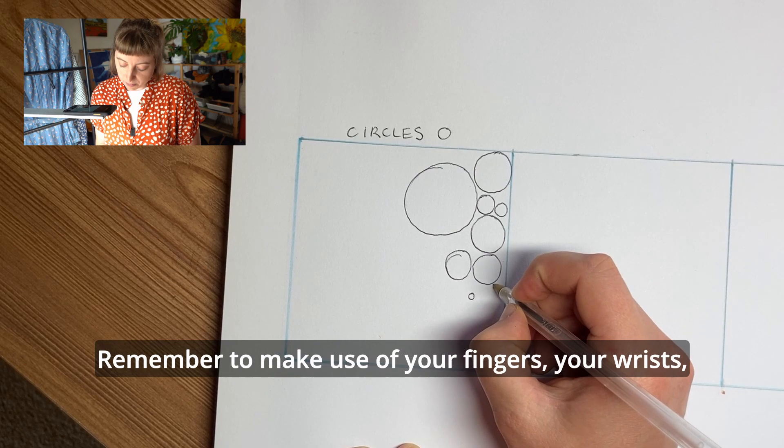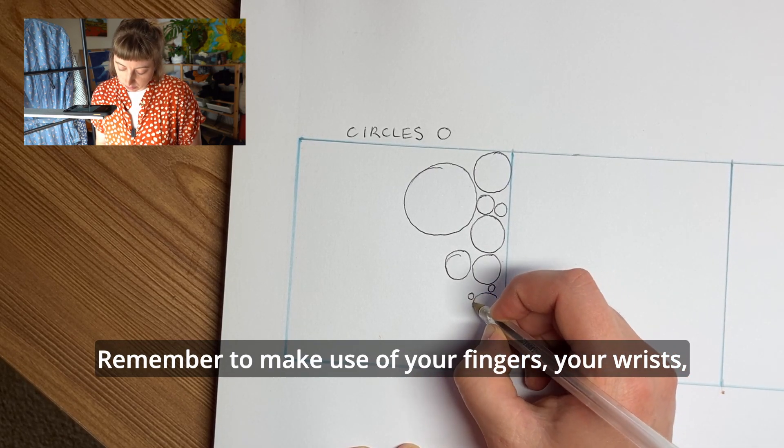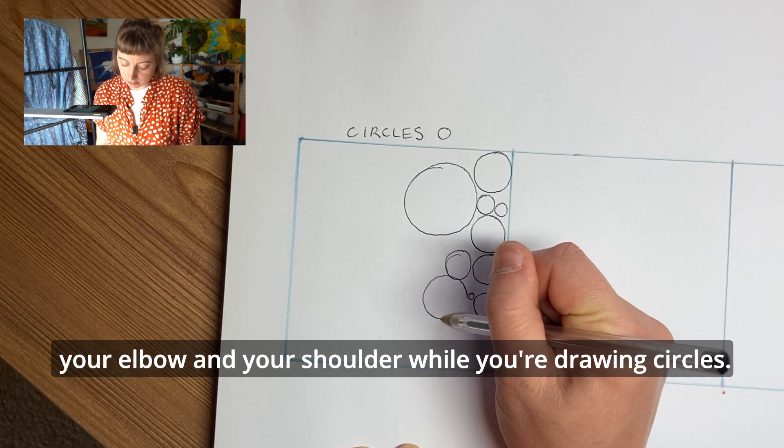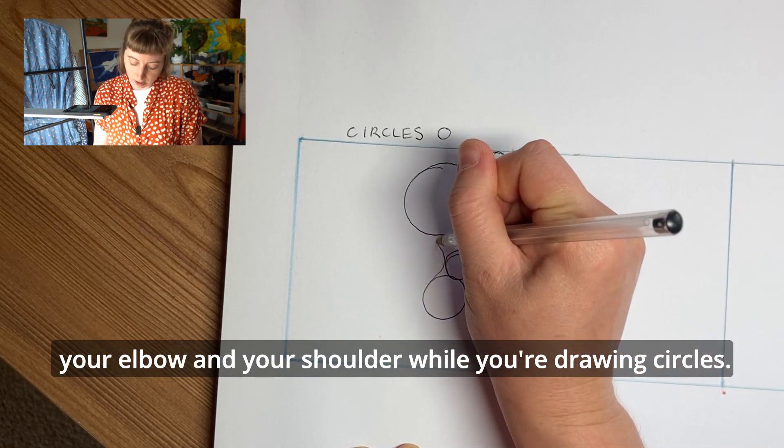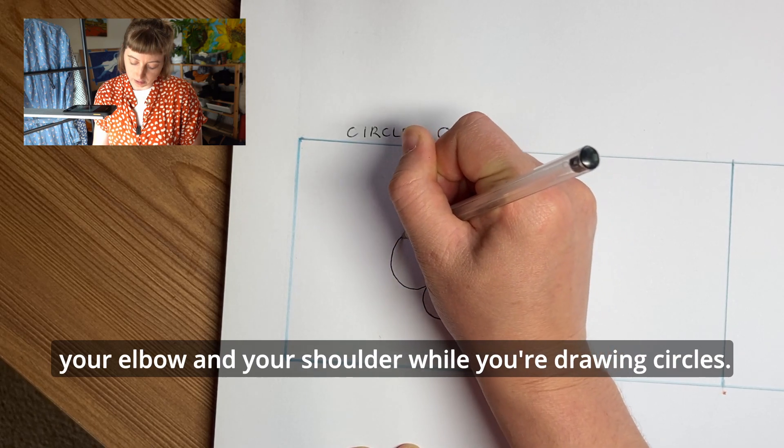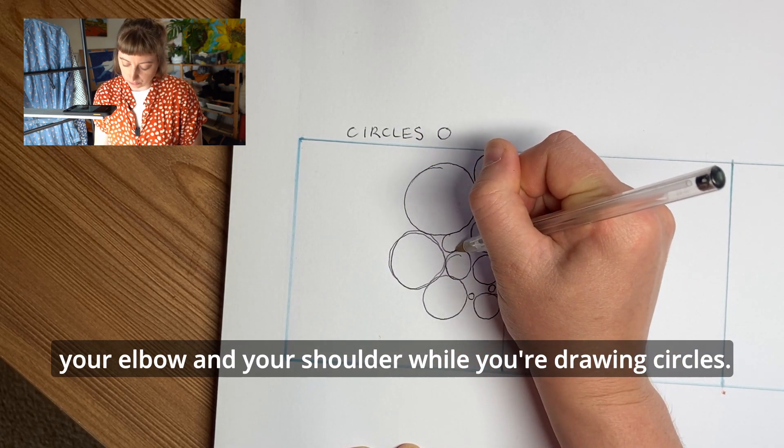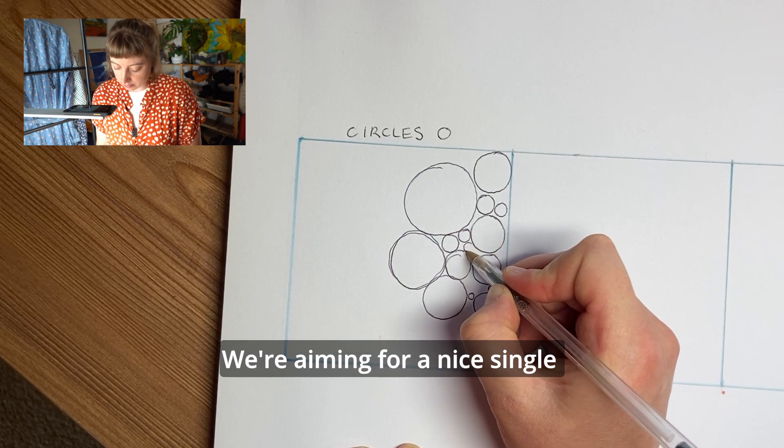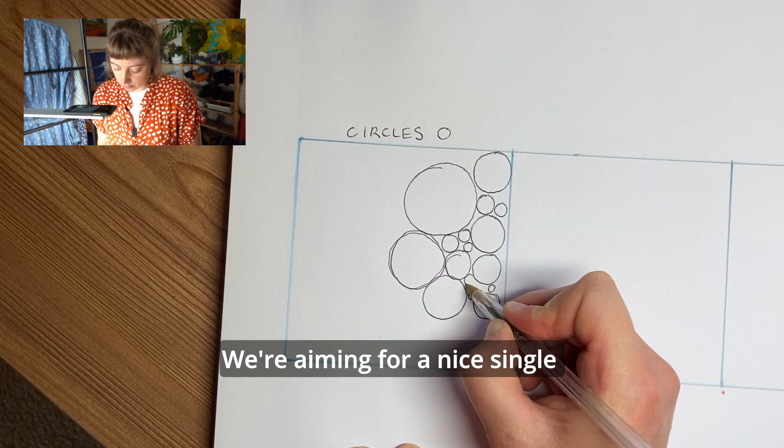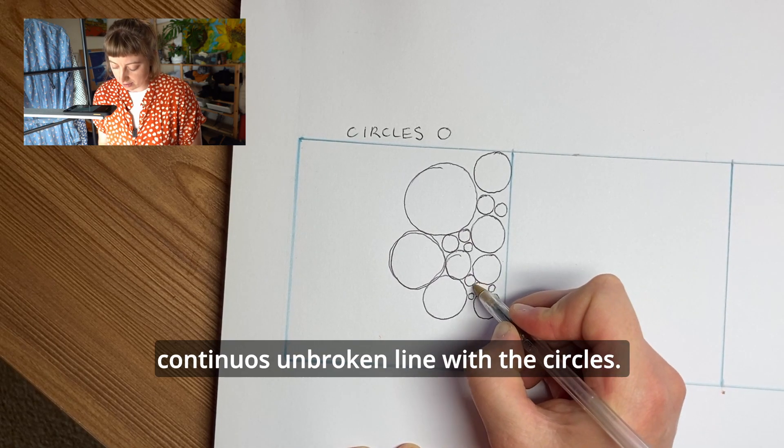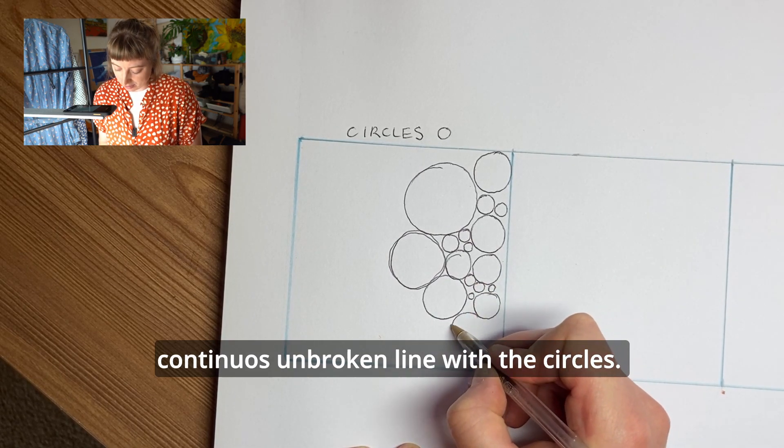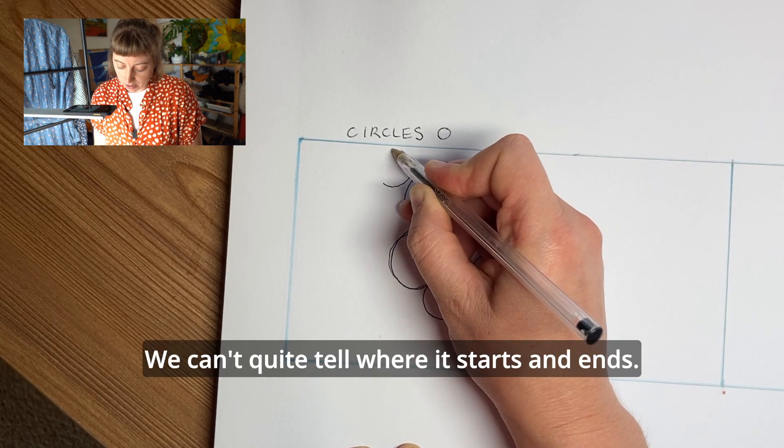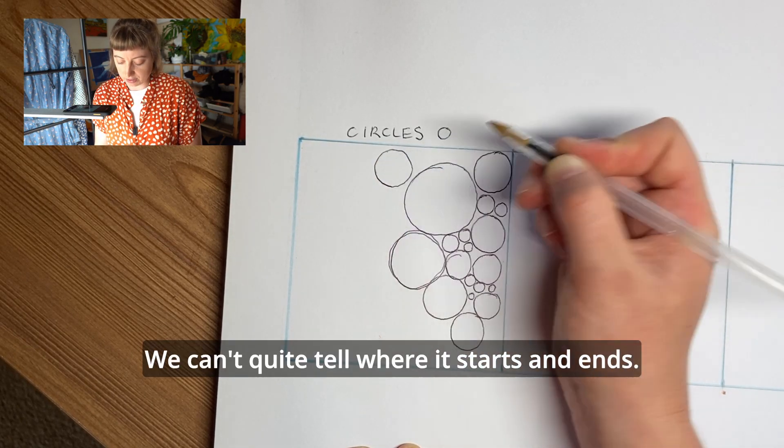Remember to make use of your fingers, your wrists, your elbow, and your shoulder while you're drawing the circles. We're aiming for a nice single continuous unbroken line with the circles. We can't quite tell where it starts and ends.